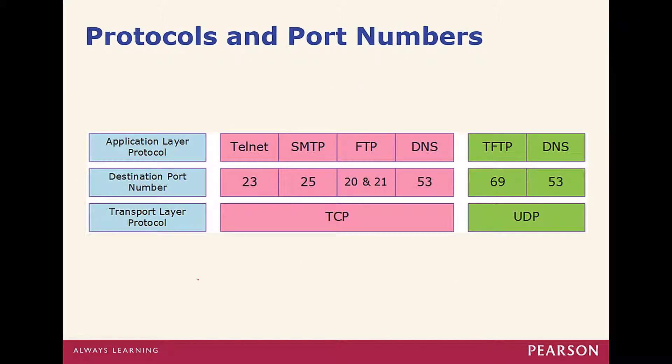Some common protocols and ports: Telnet uses port 23, SMTP uses port 25, FTP uses ports 20 and 21, and DNS uses port 53. These are TCP ports. TFTP and DNS also use UDP — TFTP uses port 69 and DNS uses port 53. DNS uses both TCP and UDP, both on port 53.